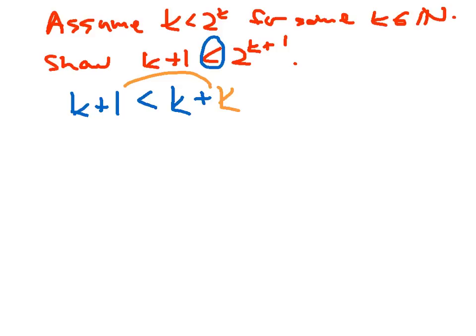And this k right here is also less than 2 to the k. So again, I'm taking each term of the sum and swapping it out for something larger, and that makes the inequality flow in the right direction. Now let's just see what happens from here. What I have here are two copies of 2 to the k, and so this is equal to 2 times 2 to the k.